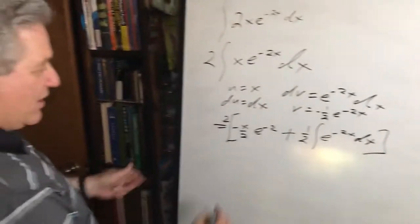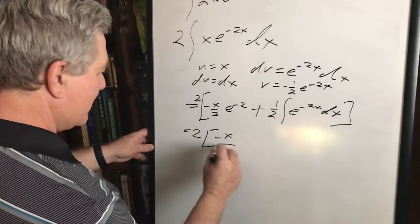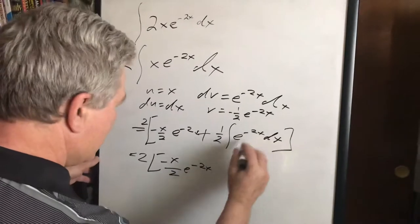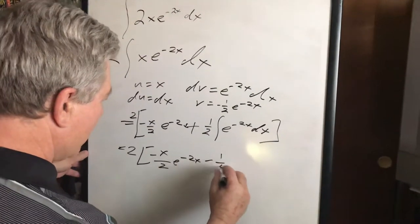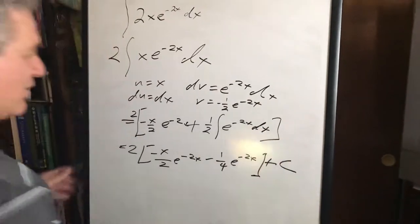Then you take out the integral there. That's equal to 2 times negative x over 2 e to the negative 2x, and then that becomes minus one fourth e to the negative 2x, and then plus c is the constant of integration.